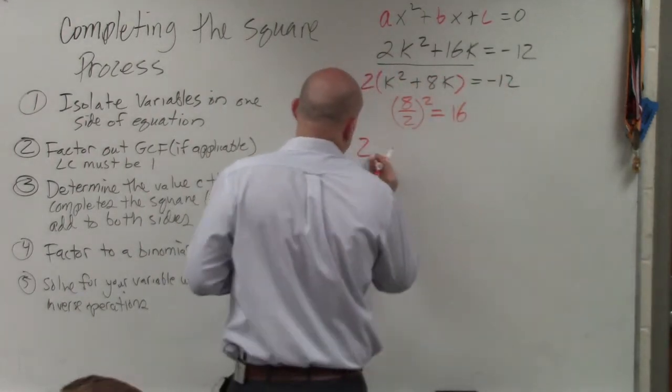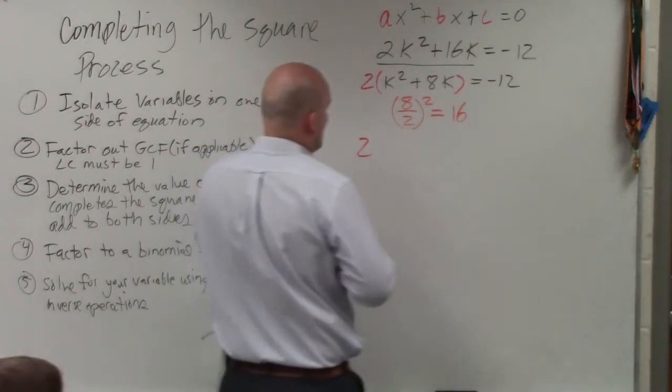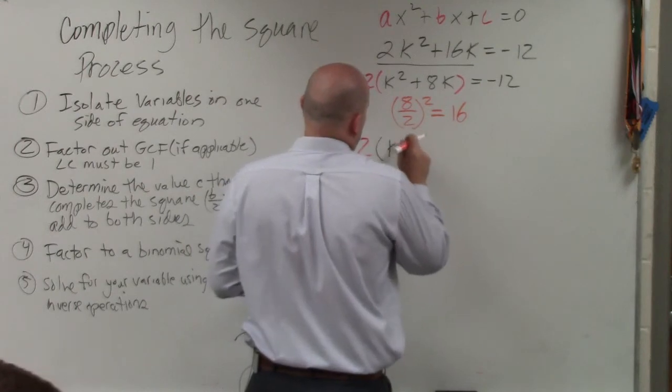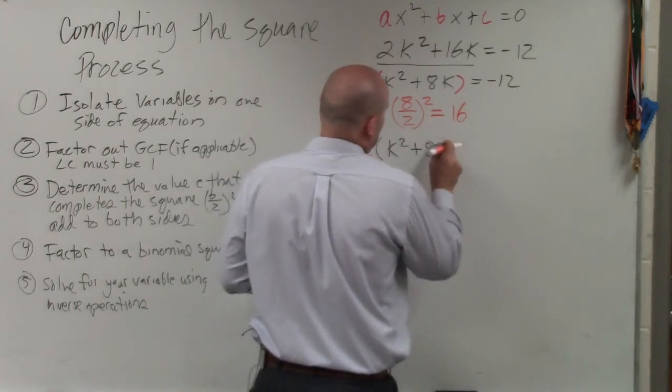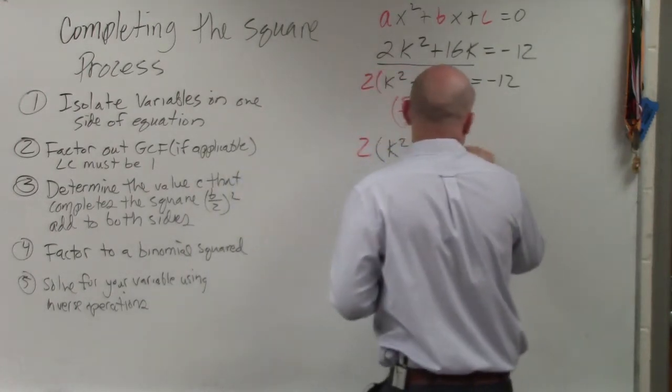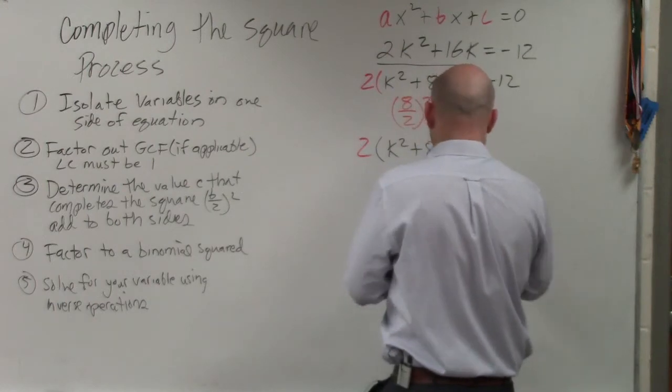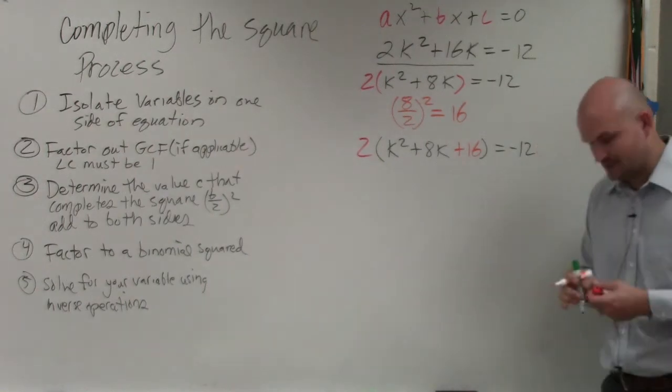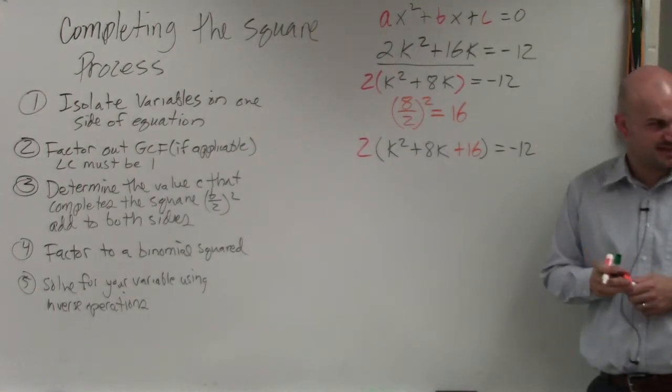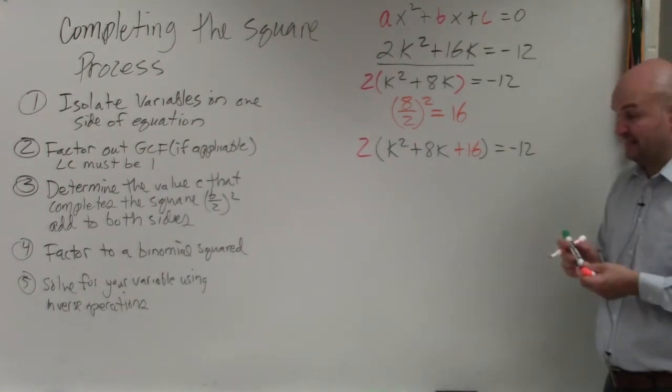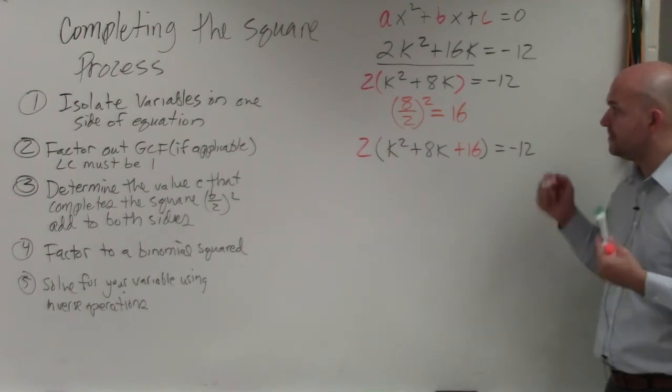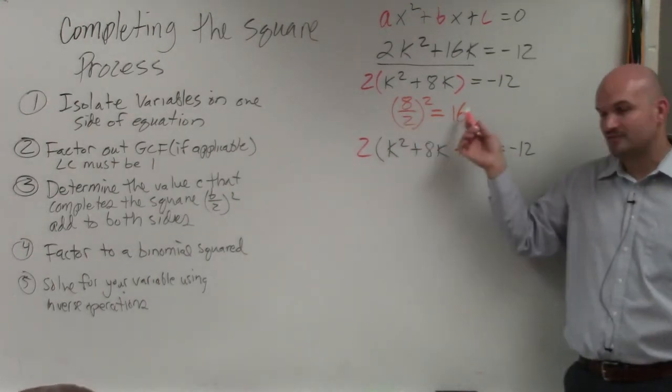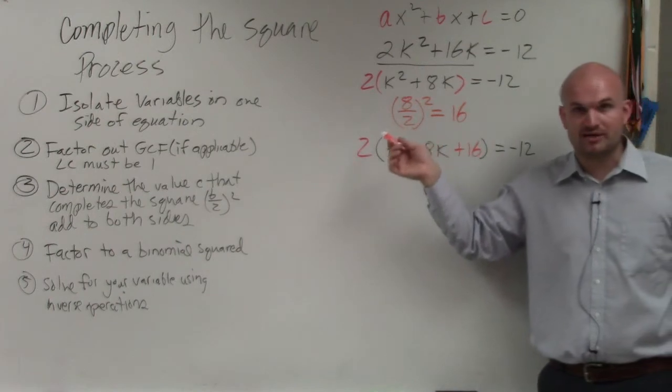So the way this works, I'm going to use color coding, because I think this helps students the most. So it's K squared plus 8K plus 16 equals negative 12. Now here's where it gets confusing. This is where students get mixed up. A lot of times, as long as they remember B divided by 2 squared, they're good. So I made up this. I did B divided by 2 squared to give me 16.